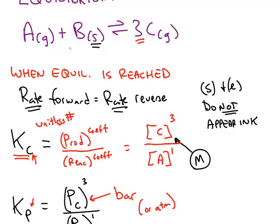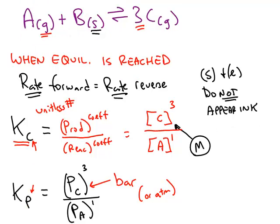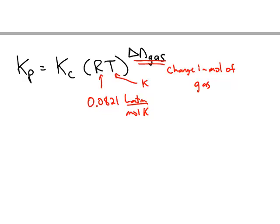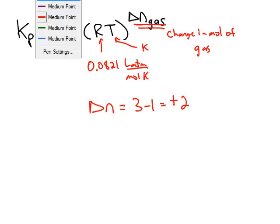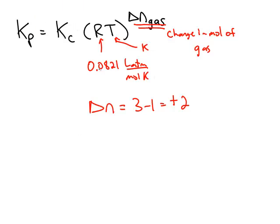For this reaction, we have 3 moles of product gas and only 1 mole of reactant gas. We do not count the mole of solid. So for this reaction, the change in the number of moles of gas is 3 minus 1, which is positive 2. Kp and Kc are unitless numbers, but you have to use the correct version of R to get the right conversion.